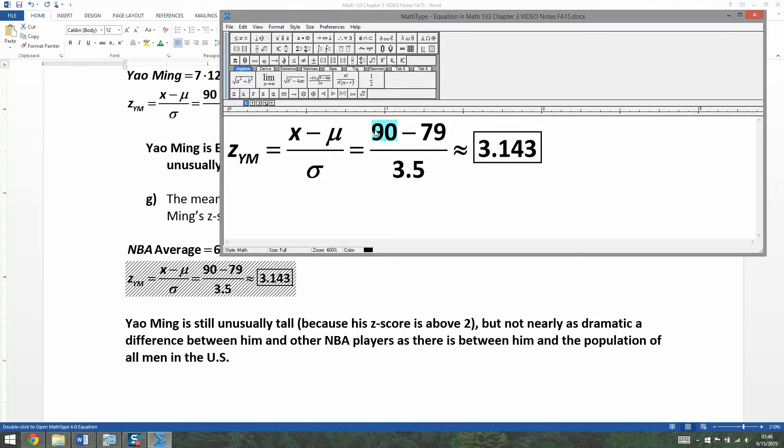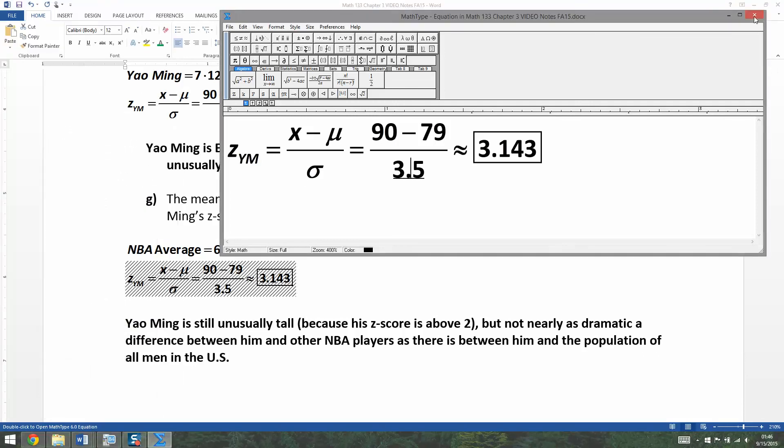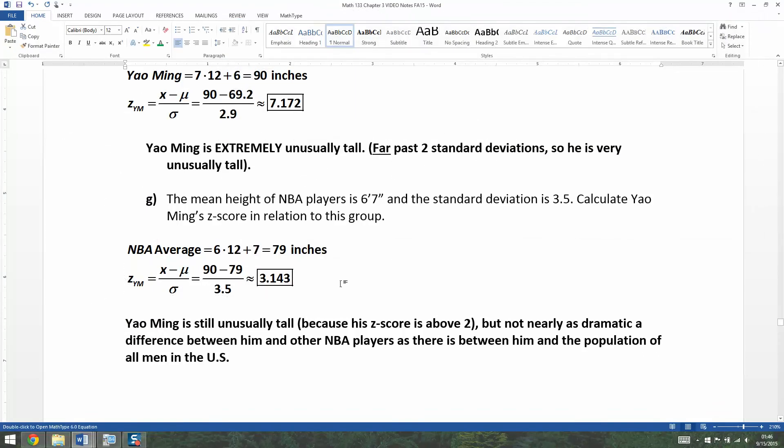I'm going to take Yao Ming, because he's still 90 inches tall, but I'm going to take away 79 and divide it by 3.5. Parenthesis 90 take away 79, close parenthesis, divided by 3.5. Sure enough, you get 3.143. Now that's still unusually tall. It's still unusual because his Z-score is above 2, but it's not nearly as dramatic a difference between him and other NBA players as there is between him and the population of all men in the U.S.